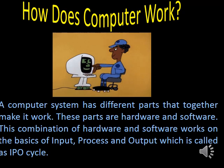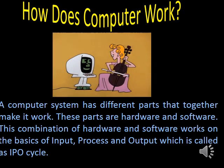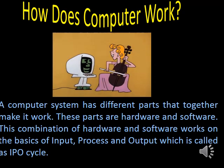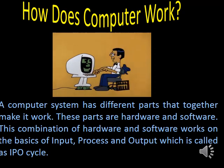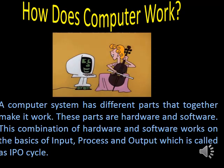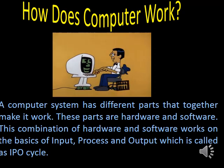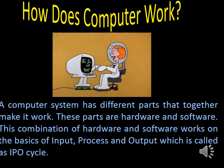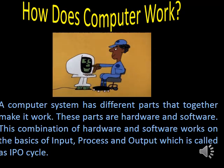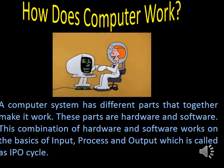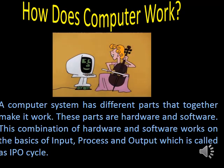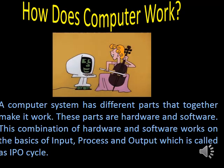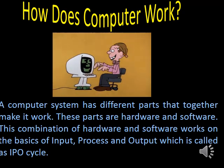Now we are going to study about how does a computer work. A computer system has different parts that together make it work. These parts are hardware and software. This combination of hardware and software works on the basis of input, process and output, which is called the IPO cycle.